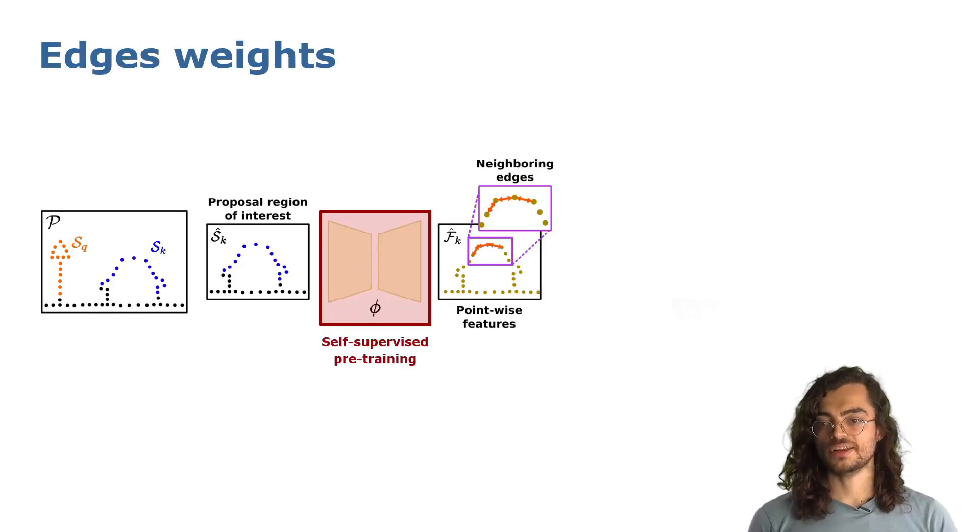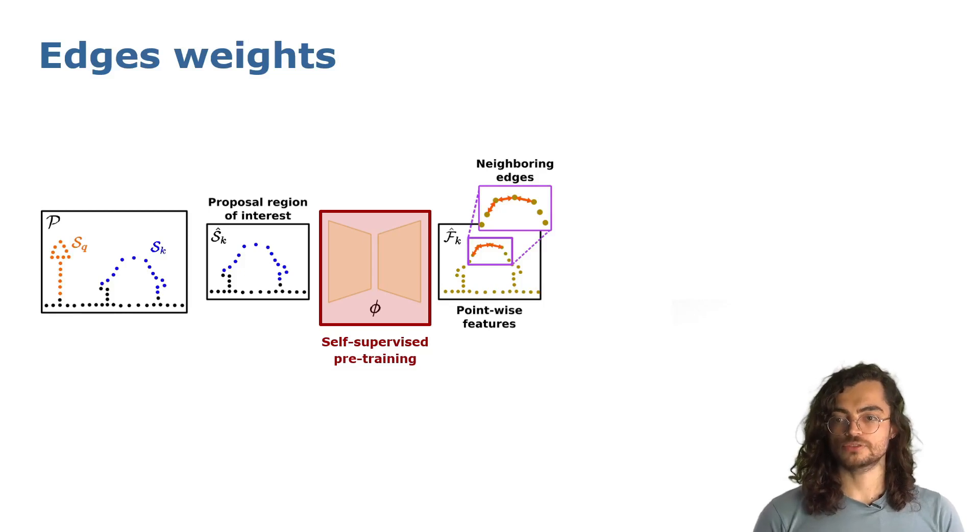Therefore, we train a network with a state-of-the-art self-supervised contrastive learning method without any labels. Then we use this network to encode pointwise features for the point cloud, computing the graph node's affinities with the point feature similarity.